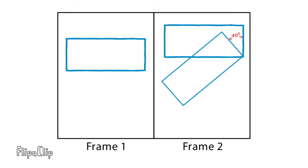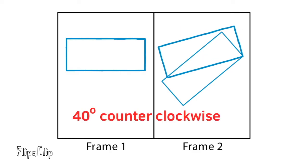The rectangle in frame 1 can be rotated 40 degrees counterclockwise to get from frame 1 to frame 2.